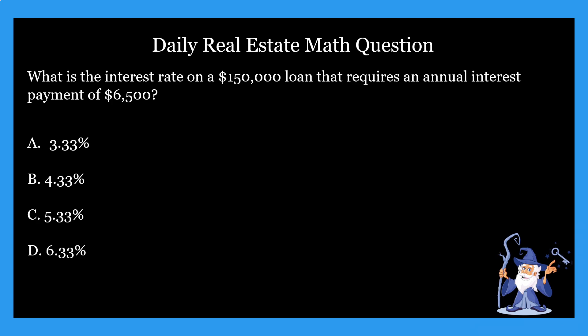Hopefully you guys came up with your answer on this one — hopefully the right answer. So what do we do in these problems? First things first, we need to look at this problem carefully. What is it asking us? It's asking us what the interest rate is — I'm going to underline that. We already have the annual interest payment, which is $6,500, and we have the total of the loan, which is $150,000. So it's asking us what the interest rate is, not the payment — the interest rate.